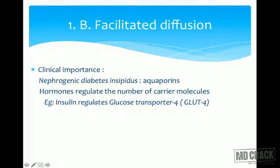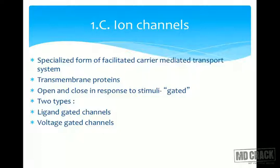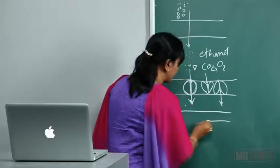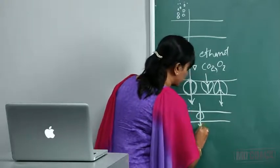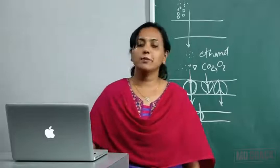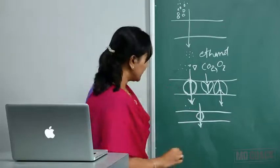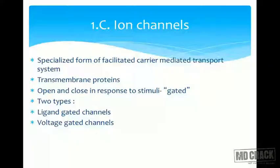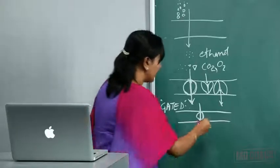The third type of transport is ion channels. Ion channels are a specialized form of facilitated carrier-mediated transport, responsible for the transport of ions. They are all transmembrane proteins. What is special about them is that these channels are gated — they can either be closed or opened depending upon certain stimuli.